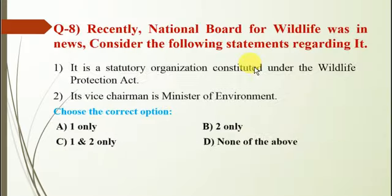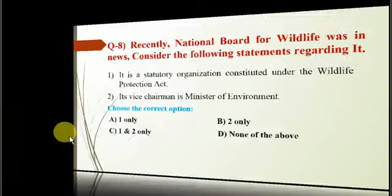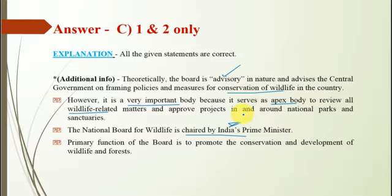Question number 8: The National Board of Wildlife was recently in the news. Statement 1: It is a statutory organization constituted under the Wildlife Protection Act. Statement 2: Its vice-chairman is the Minister of Environment. The correct option is C — both statements are correct. The board is advisory in nature, advising the central government on framing policies for wildlife conservation. However, it is a very important body as it serves as the apex body to review all wildlife-related matters and approve projects in and around national parks and sanctuaries. The chairman of the National Board for Wildlife is the Prime Minister, and the vice-chairman is the Minister of Environment.